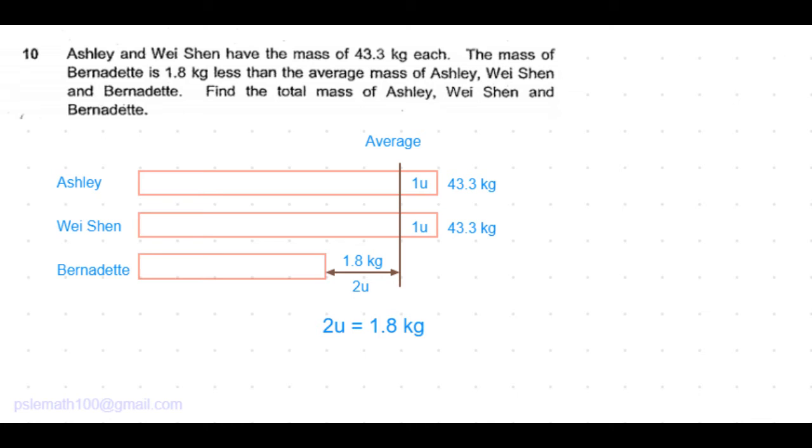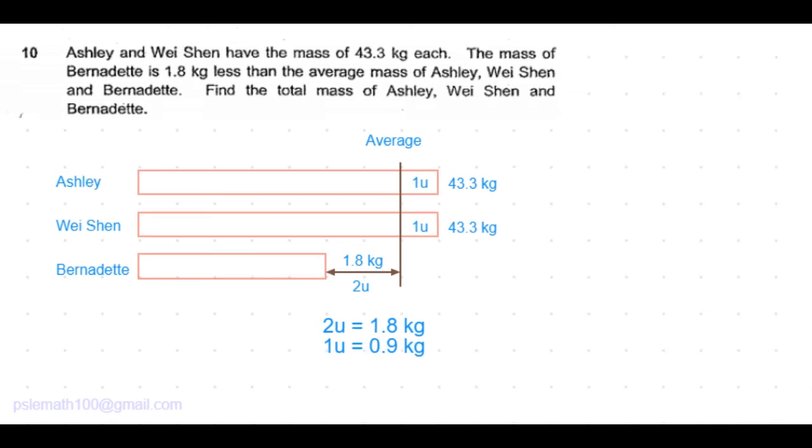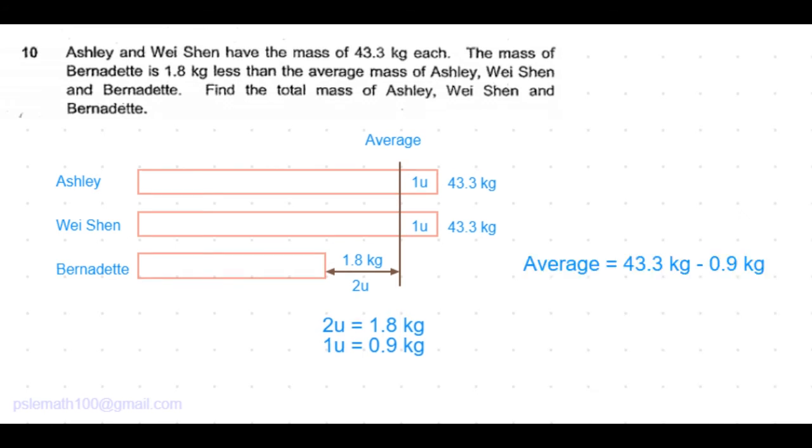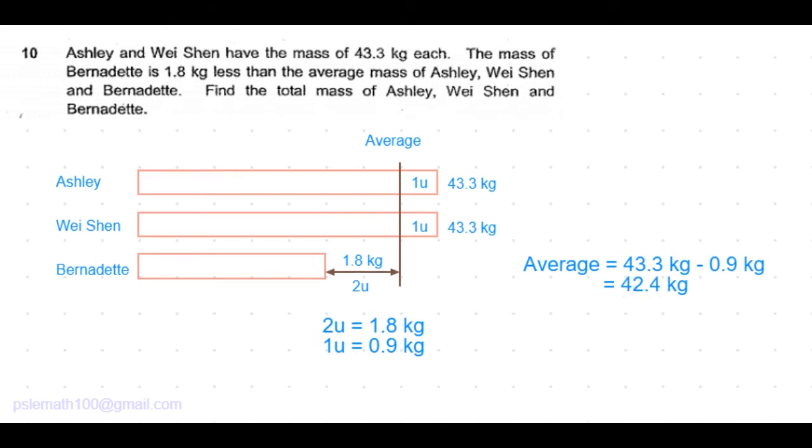So 2 units is equal to 1.8 kilograms. We get the value of 1 unit to be equal to 0.9 kilograms. Average mass is equal to 1 unit less than mass of Ashley, that is equal to 43.3 kilograms minus 0.9 kilograms, that is equal to 42.4 kilograms.